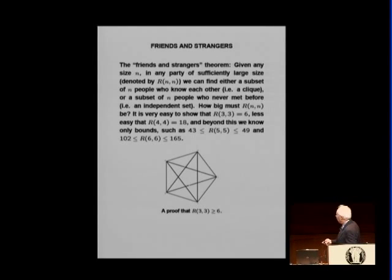So, how big must be the size of the party to guarantee that either you find a set of n strangers or a clique of n people. Well, with three... This is proof that... Oops. With three is... At least six. Here are five people.